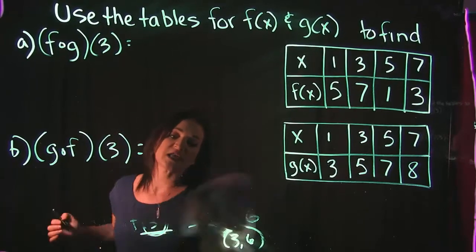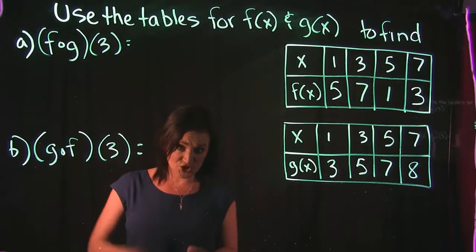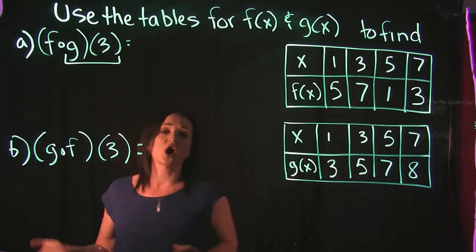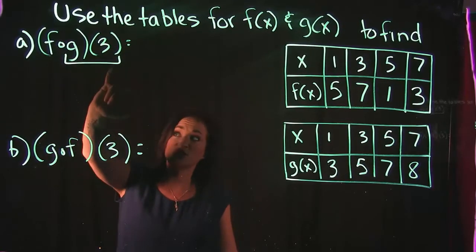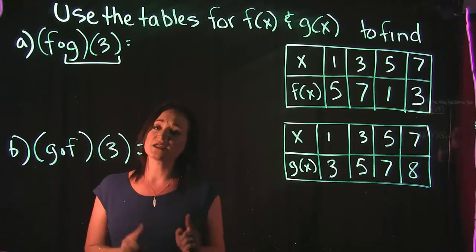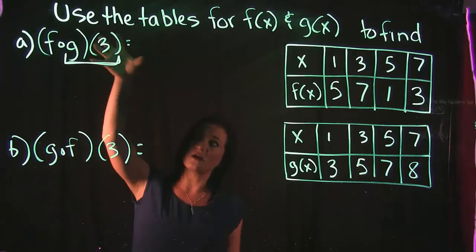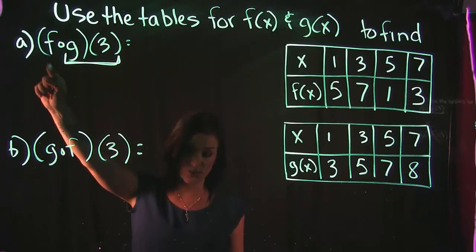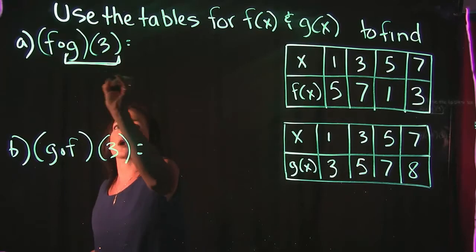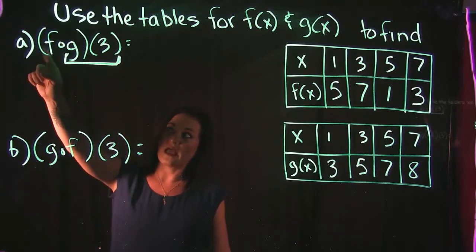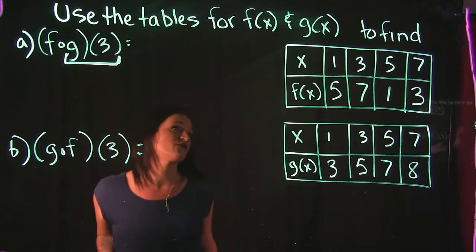Our specific question asks us to go just a little further — we're finding f of g of x. When we do this kind of composition problem, we work from right to left. So we start with finding g of 3 first. F of g of 3 wants us to find g of 3, and that answer is what we plug into f of x. So we do g first, then f.